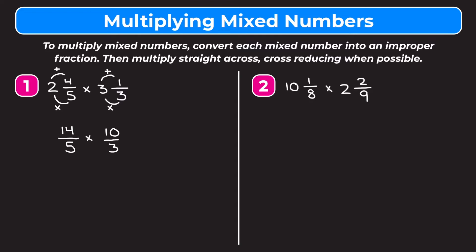We can't simplify either fraction but we can cross reduce. We can cross reduce the 5 and the 10 because they're both divisible by 5. So we divide them both by 5: 5 divided by 5 is 1, and 10 divided by 5 is 2. Now we have 14 times 2 on the top which is 28, and 1 times 3 on the bottom which is 3. Finally we change this back into a mixed number: 3 goes into 28 nine times, 3 times 9 is 27 so we have 1 left over. Put that over our denominator of 3, so we get 9 and a third as our answer.